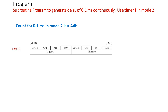The GATE bit for Timer 1 is 0. The C/T bit is 0 because we are using timer mode. The mode bits should be 1 0 for Mode 2. The Timer 0 bits are in don't-care condition, assumed as 0. So the TMOD register should be initialized with the value 20H.